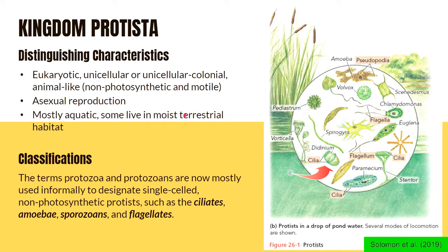They mostly reproduce through asexual reproduction and are mostly aquatic organisms, while very few could live in moist terrestrial habitat. In a drop of pond water, you can find several protists such as amoeba, chlamydomonas, euglena, paramecium, stentor, spirogyra, pediastrum, and vorticella.